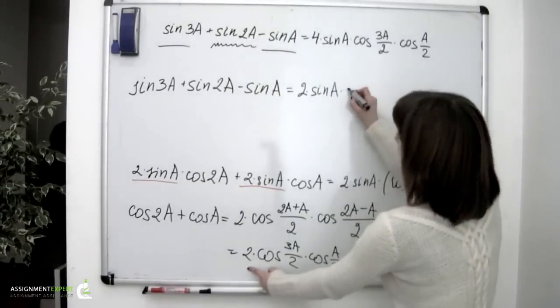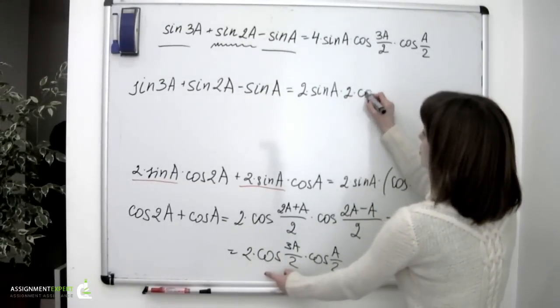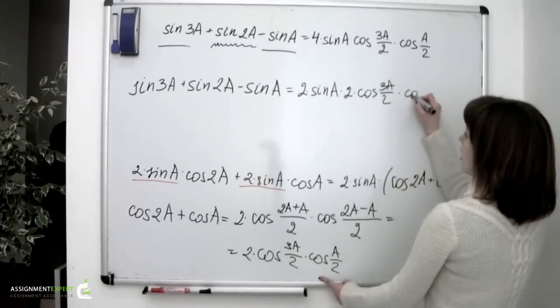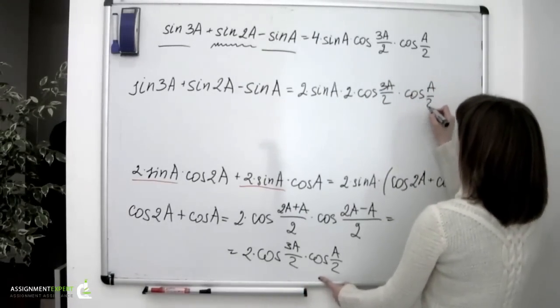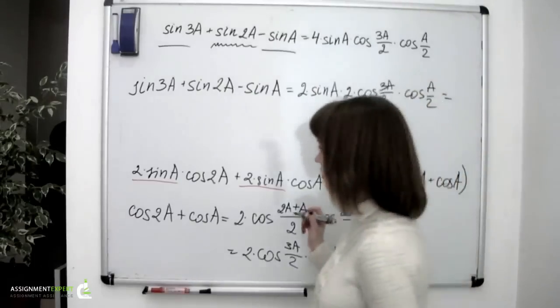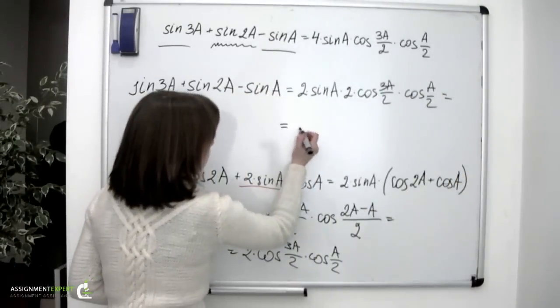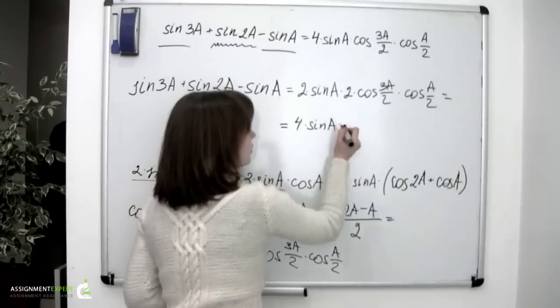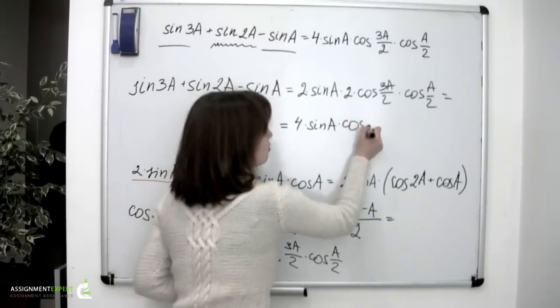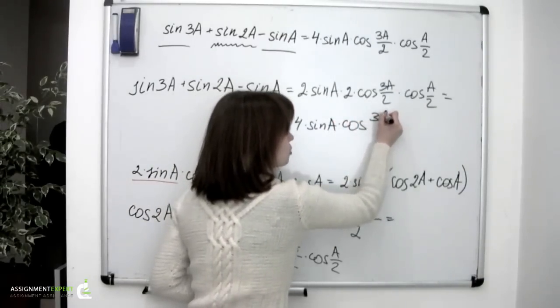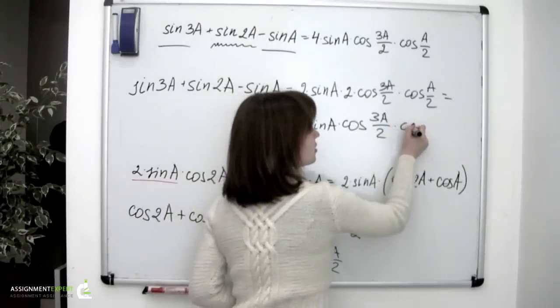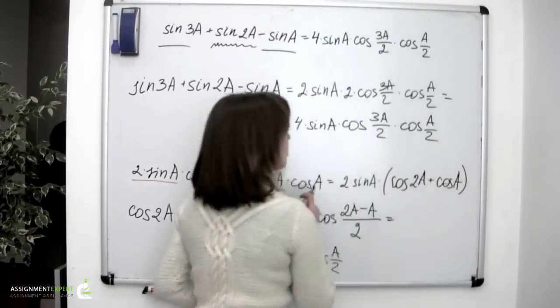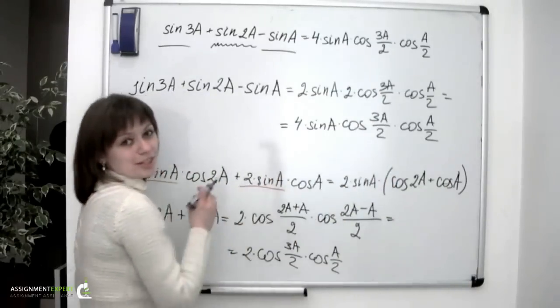Times 2 times sine a equals 4 times sine a times cosine 3a over 2 times cosine a over 2, which is exactly what we were asked to prove.